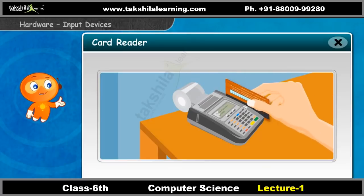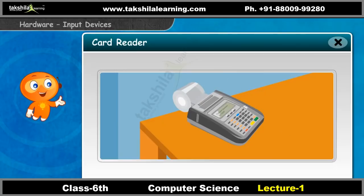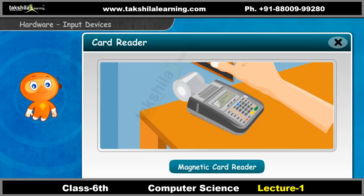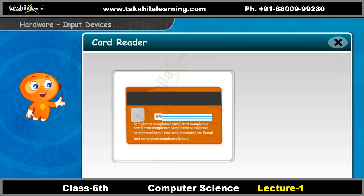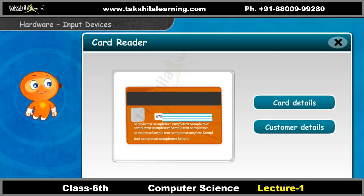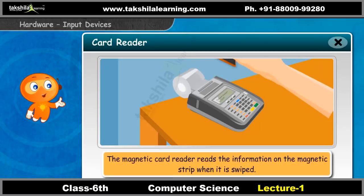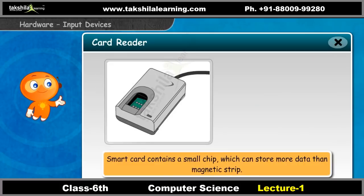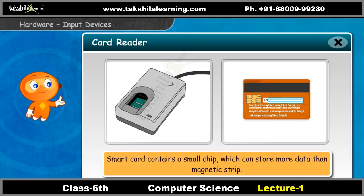Have you ever seen a shopkeeper swipe a credit card in a machine? That machine is called a magnetic card reader. All credit cards have a magnetic strip which stores information about the card and customer details. The magnetic card reader reads the information on the magnetic strip when it is swiped. Smart card reader is also a type of card reader. Smart cards contain a small chip which can store more data than a magnetic strip.